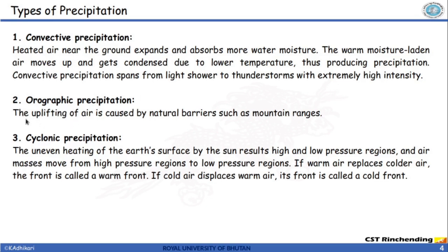Orographic precipitation occurs when the air mass containing moisture is obstructed by a barrier such as mountains. When there is a mountain on the pathway of the moisture-laden air, it tends to rise. As it rises, the temperature decreases with altitude, reaches the dew point temperature, and then there is a shower.